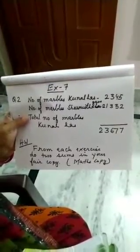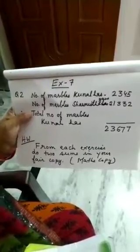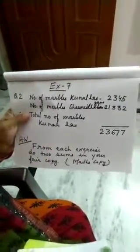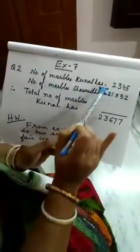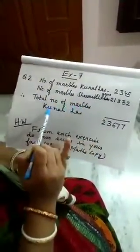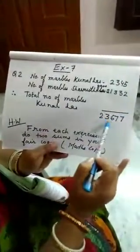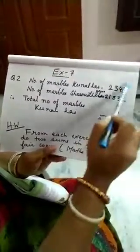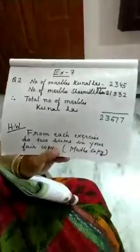That is word problem. We will solve word problem number 2. Kunal has 2345 marbles. Sarmishta gave 21,332 marbles to Kunal. How many marbles does Kunal have in all? So see, we will write the statement here. It's very compulsory children. Number of marbles Kunal has 2345. Number of marbles Sarmishta gave 21,332. So therefore, total number of marbles Kunal has. Answer is, you add, answer will come 23,677. You will add these two numbers. This will come. Now homework.